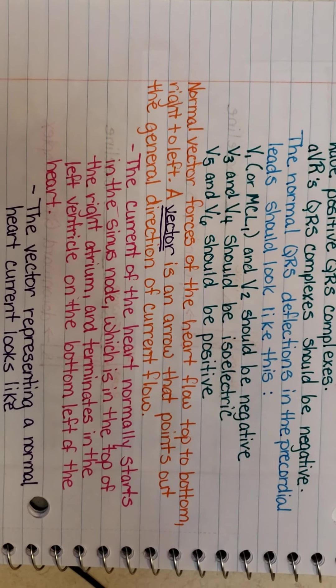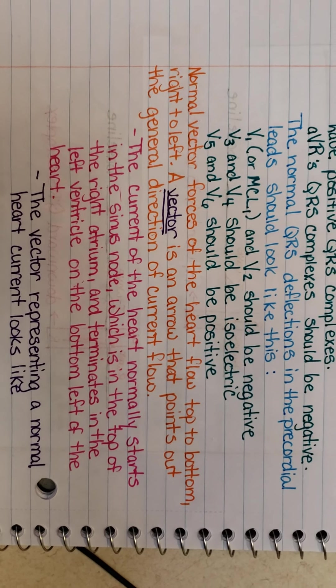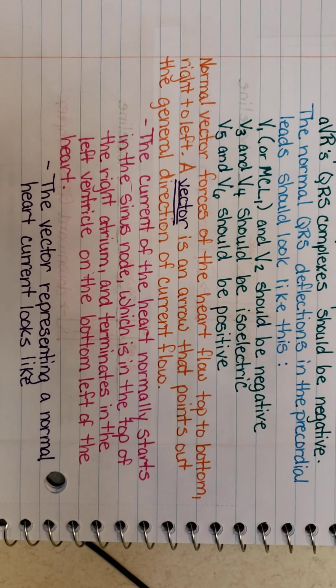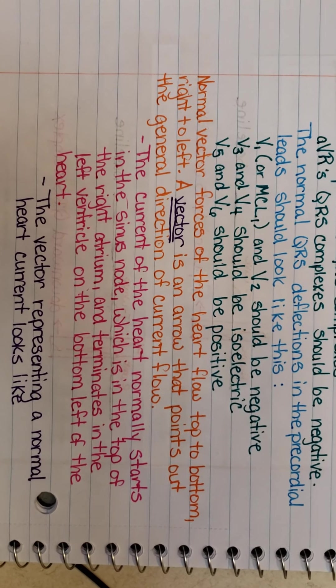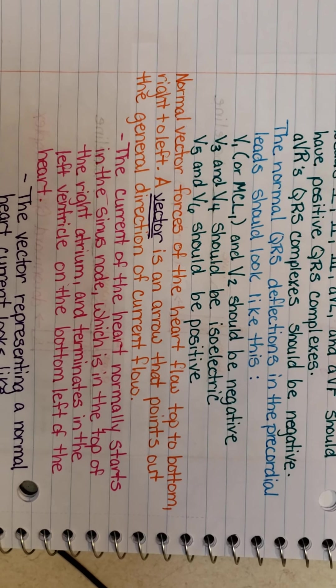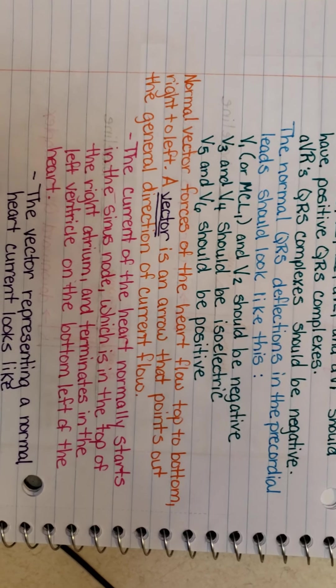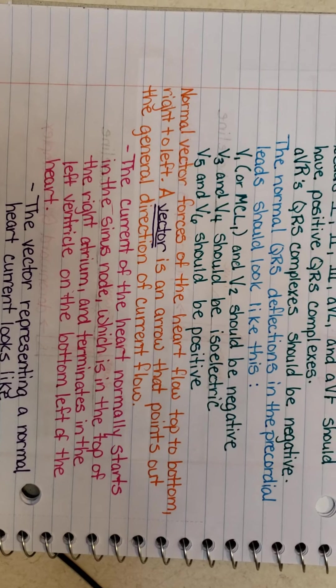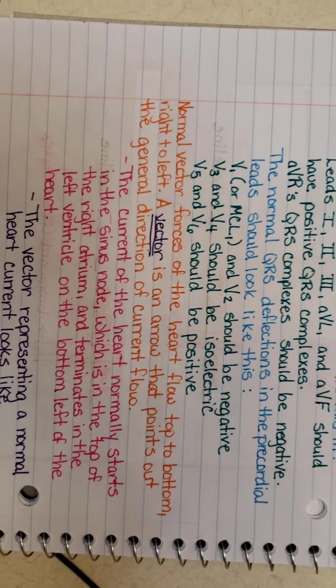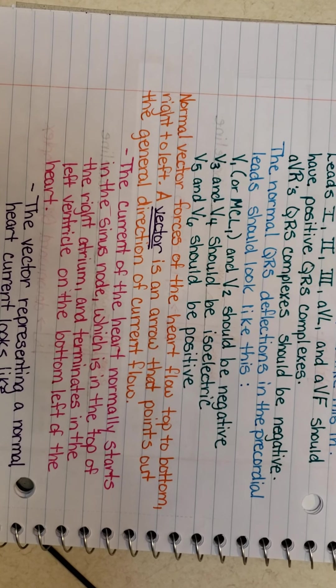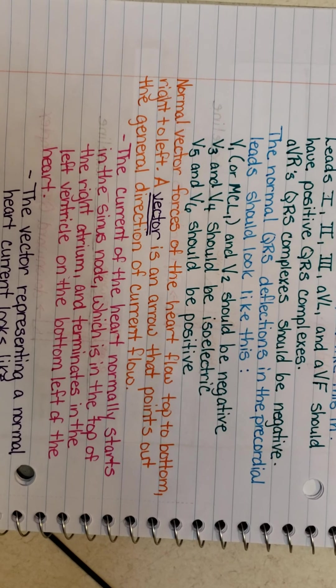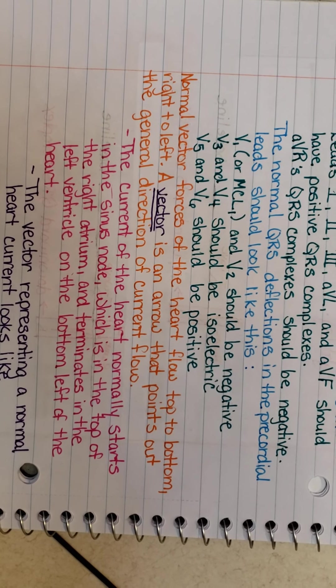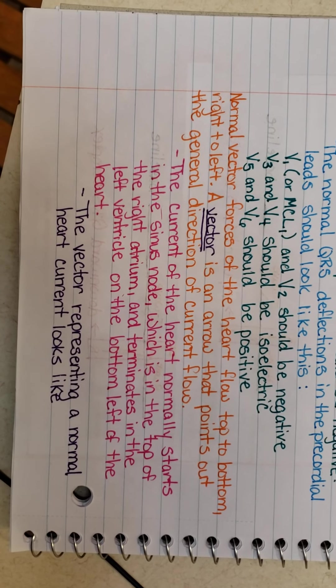Normal vector forces of the heart flow from top to bottom, right to left. A vector is an arrow that points out the general direction of current flow. The current of the heart normally starts in the sinus node, because remember our conduction pathway, every electrical impulse is supposed to start at the sinus node or SA node, which is in the top of the right atrium, and terminates in the left ventricles on the bottom left of the heart. The vectors representing a normal heart current looks like this.